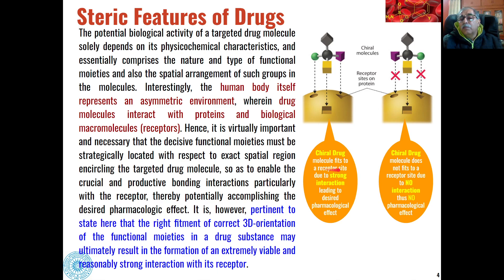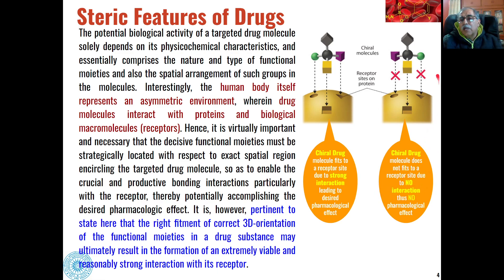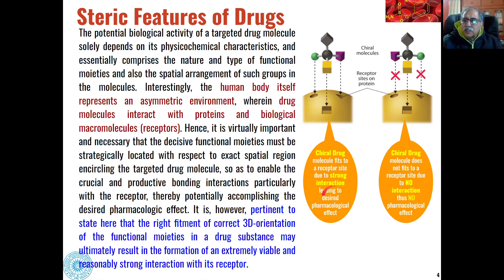A chiral drug may fit to a receptor site due to strong interaction, and this strong interaction will lead to the desired pharmacological effect. Whereas if the chiral molecule does not fit to the receptor site, there is no interaction. As you can see, these are the receptor sites of the macromolecule or protein, and this is our chiral molecule. If the functional groups present on the chiral molecule fit into these receptor sites, only then a strong interaction will take place.